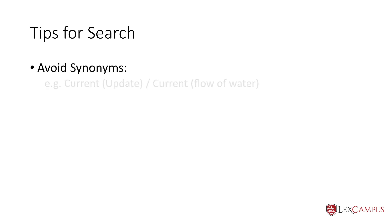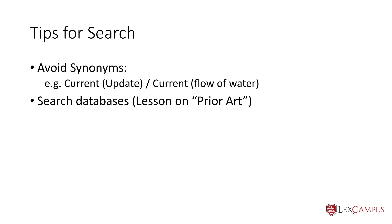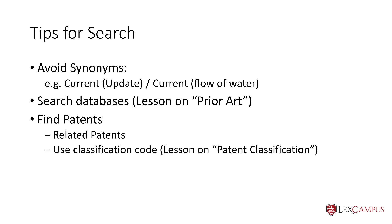There are some tips for search, and you would find enough material in the public domain on how search has to be done. You would use Boolean operators to avoid certain words which you don't want to appear in the search — for instance, 'current' can mean present, up-to-date, or flow of water. You would search databases depending on the scope of your search, as covered in the lesson on prior art. Once you identify certain terms through keyword search, you would look for related patterns in that field, which can also be done using the classification code.